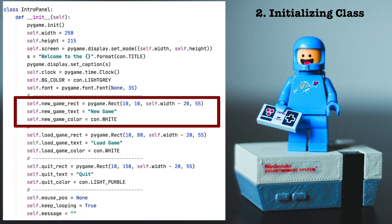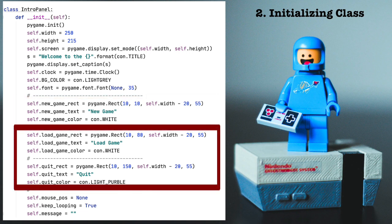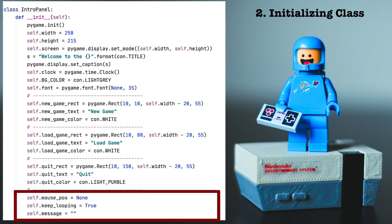So here you can see left equals 10, top equals 10, width equals 250 minus 20, which is 230, and height is 215. The other two lines are self-explanatory. We set up two more rectangles, so we do this again two more times, creating rectangles for load game and quit game. We then initialize the remaining instance-wide variables, those three at the bottom.